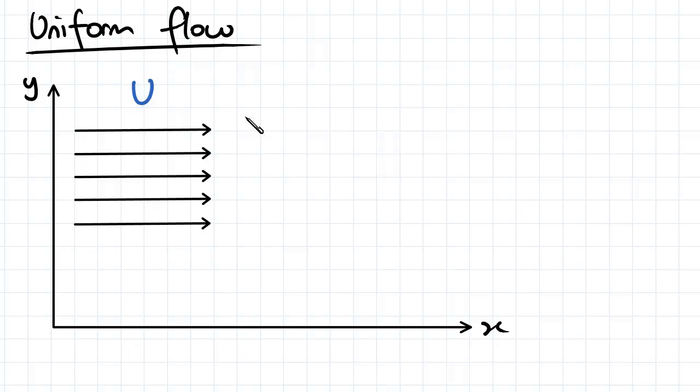If we want to define that in terms of our velocity components u and v, looking in a 2D sense, we're going to have u equal to some constant value U and v equal to zero because we've only got flow in the x direction. There's no flow in the y direction.